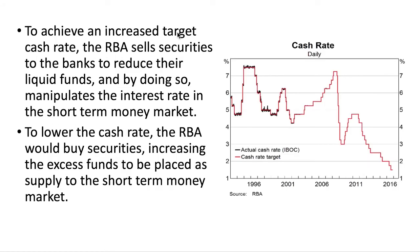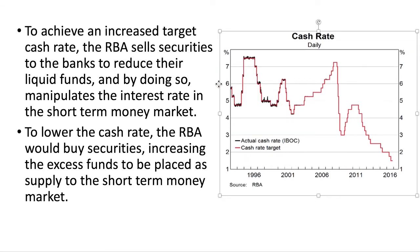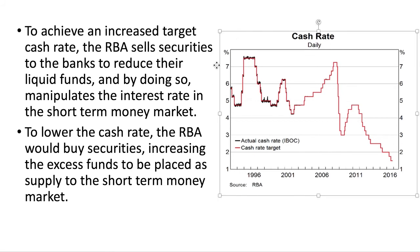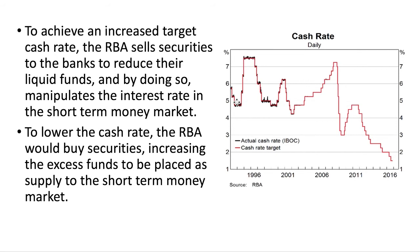If they want to increase the target cash rate, the RBA will sell securities to the banks to reduce their liquid funds, and by doing so, manipulate the interest rate in the short-term money market. If they want to lower the cash rate, the RBA will buy securities, increasing the excess funds supplied to the short-term money market. And you can see that they've gotten better at it over time.